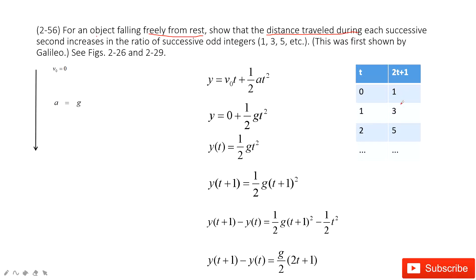So it's 1, 3, 5, 7, 9, and so on. So in this one, we can prove that the distance traveled during each second increases in the ratio of successive odd integers.